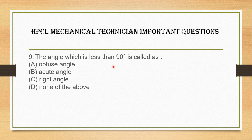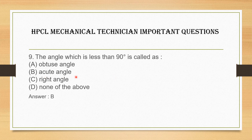Next question: the angle which is less than 90 degrees is called what? Options are: A. Obtuse angle, B. Acute angle, C. Right angle, D. None of the above. The answer is B — acute angle. An angle less than 90 degrees is called an acute angle, while exactly 90 degrees is called a right angle.